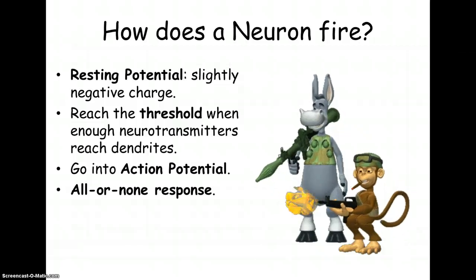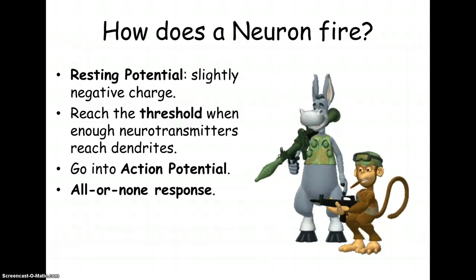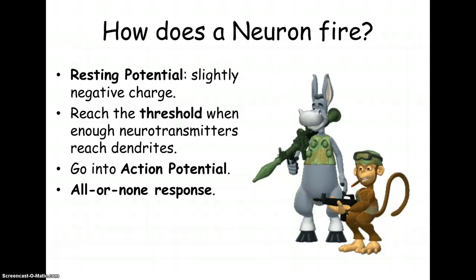If you think about if you've ever held a gun before and shot a gun or just imagine it doesn't matter how hard you pull that trigger. It's going to shoot whether you pull it lightly or very very hard. The bullet will have the same speed and that is how neurons fire.